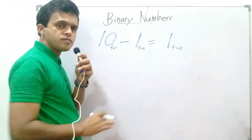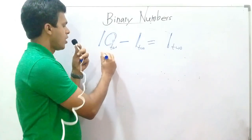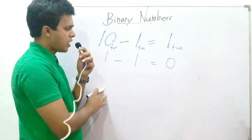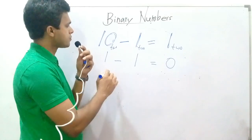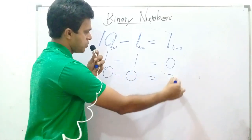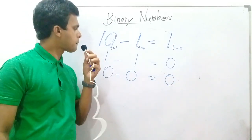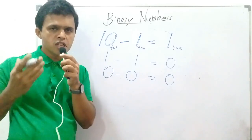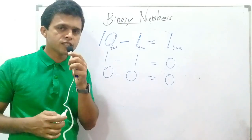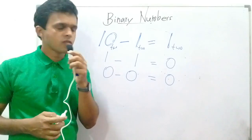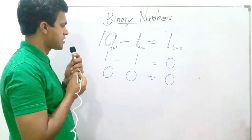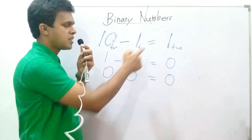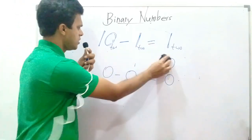10 minus 1 equals 1. 1 minus 1 equals 0. 0 minus 0 equals 0. These are the relations that should be understood to do subtraction of binary numbers. Let's simplify the sums related to this part.